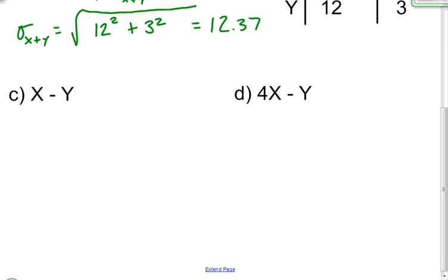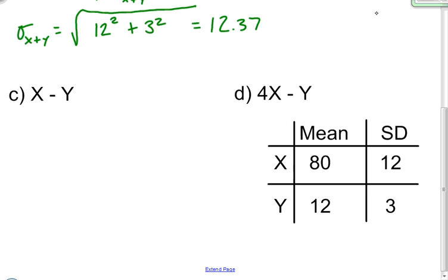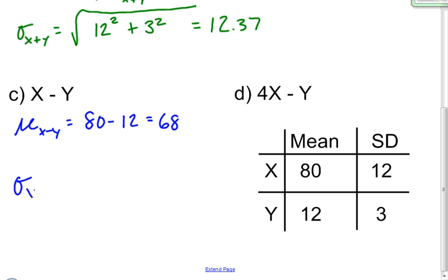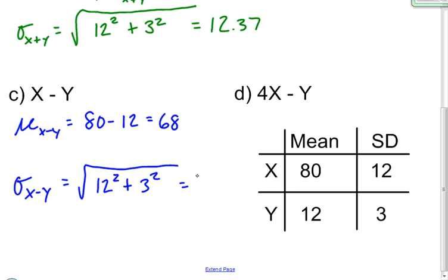Let's look at the difference between the random variables x and y. The mean for the difference between the random variables is equal to the difference of the means, so in this case it would be 80 minus 12, which equals 68. But again we have to work a little bit differently with the standard deviation. When finding the standard deviation of the difference of two random variables, you take the square root of the sum of the variances — 12 squared plus 3 squared — and take the square root, which again gives us 12.37.